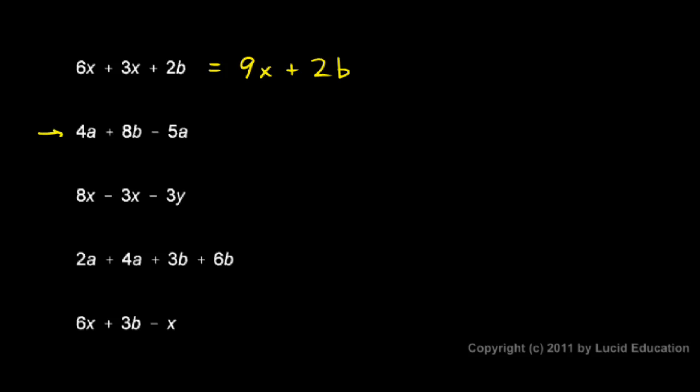Now the next one: 4a + 8b - 5a. Well, I have an a term and an a term, and don't forget that this a term is negative. That's negative 5a. So 4a and negative 5a, those get combined. And 4a and negative 5a, well, four and negative five is negative one. So this gives me -1a, and then I still have the 8b, which can't be combined with anything, but it's still there.